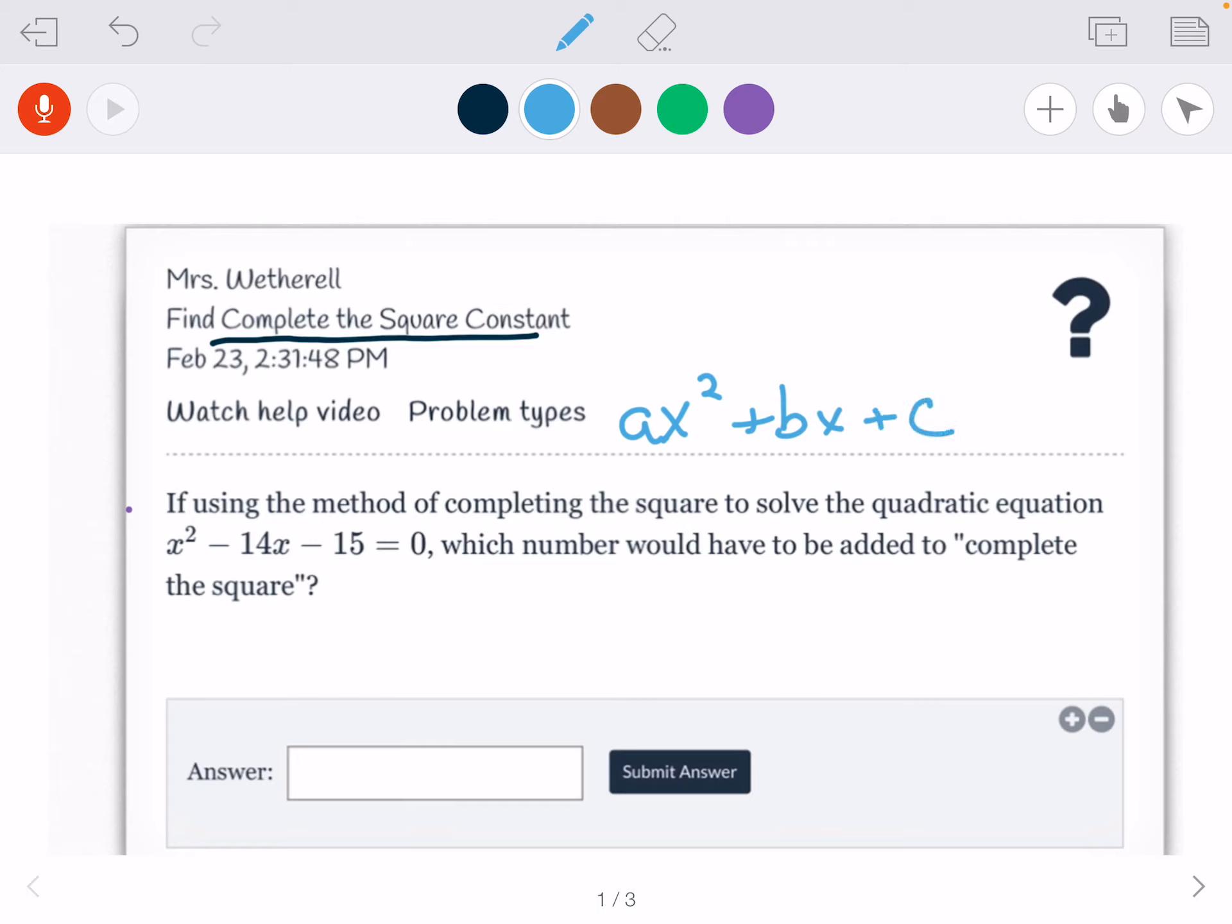That b is our magic number that we're looking at. It's the one with the single variable, the exponent of 1. So here's the number I'm looking at. I'm not taking the x, just taking the number. All you do is take half of that number, so you take half of whatever the b is, and then you square it. So 14 divided by 2 is 7. Then I square it, so 49. I would type 49 in here and submit.